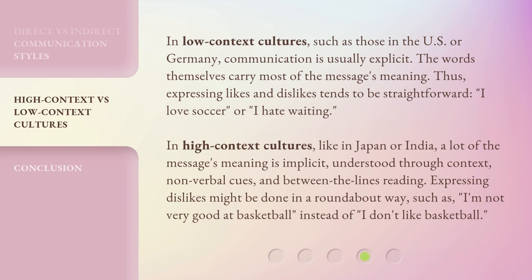In low-context cultures, such as those in the US or Germany, communication is usually explicit — the words themselves carry most of the message's meaning. Thus, expressing likes and dislikes tends to be straightforward: 'I love soccer,' or 'I hate waiting.' In high-context cultures, like in Japan or India, a lot of the message's meaning is implicit, understood through context, non-verbal cues, and between-the-lines reading. Expressing dislikes might be done in a roundabout way, such as 'I'm not very good at basketball,' instead of 'I don't like basketball.'